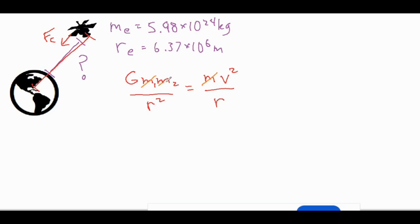So this m over here we'll go ahead and rewrite it and call it me, the mass of the thing that is being orbited around. If we take this r and cross multiply it up and over here then it would cancel out one of those r's.